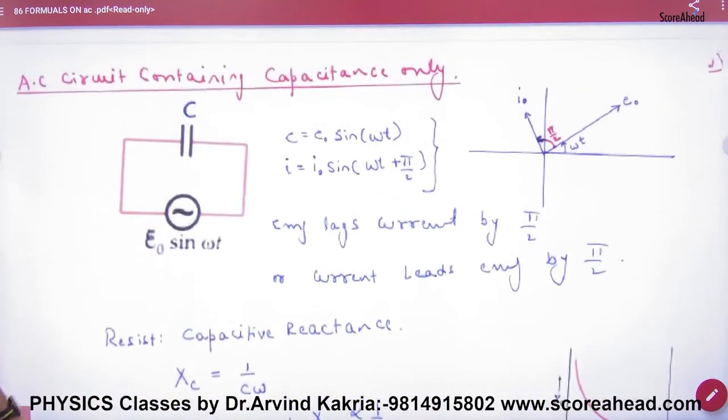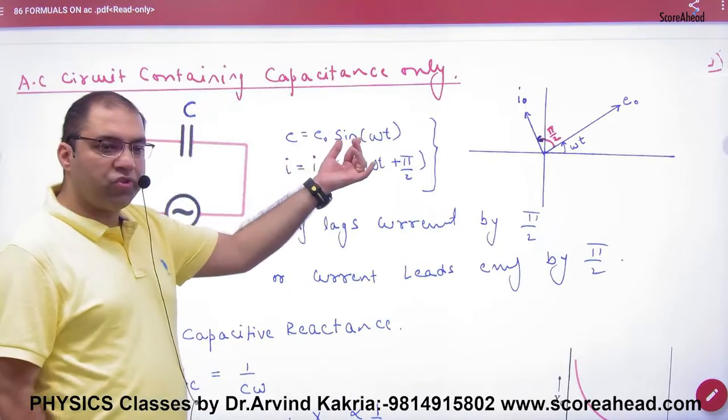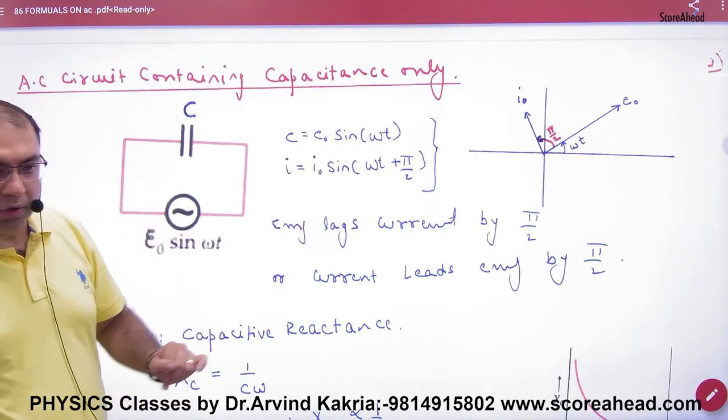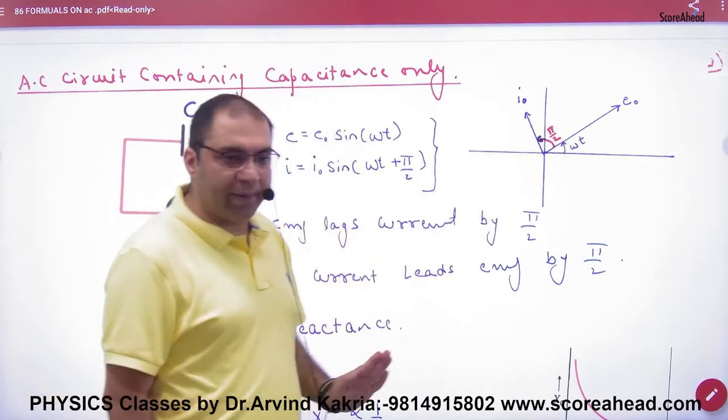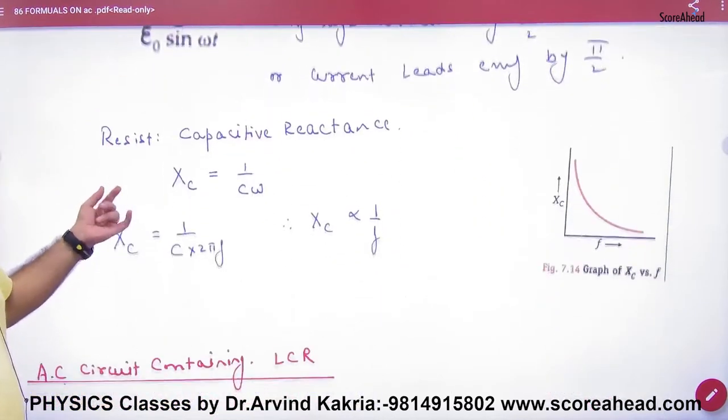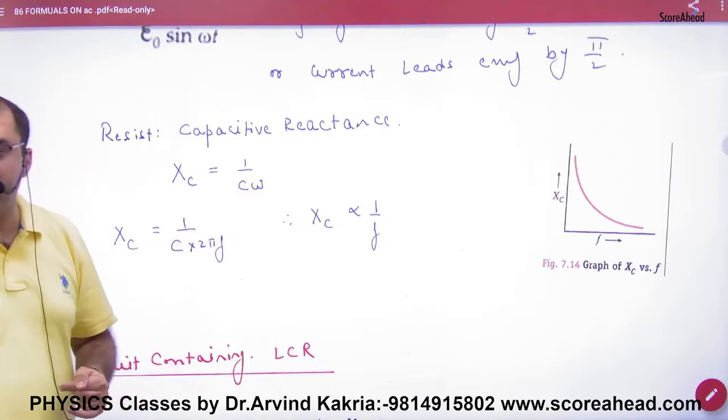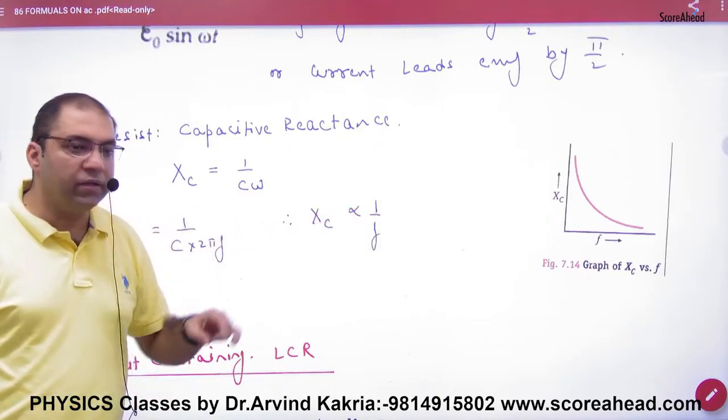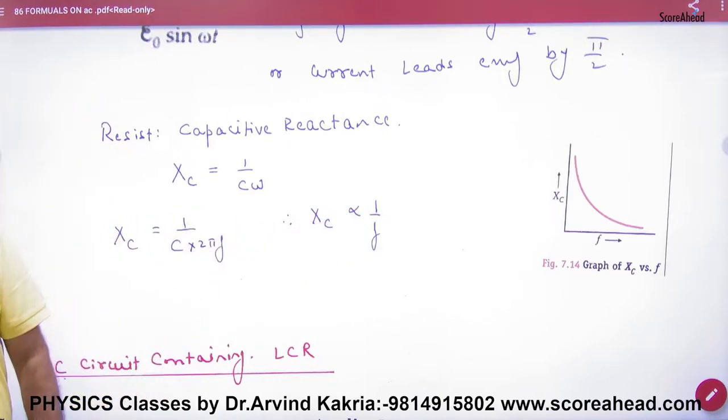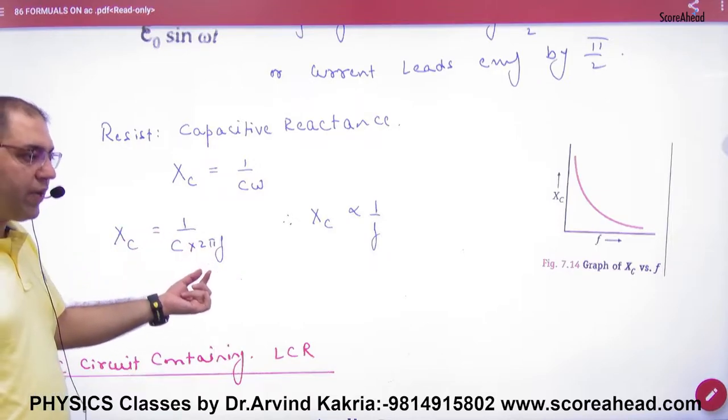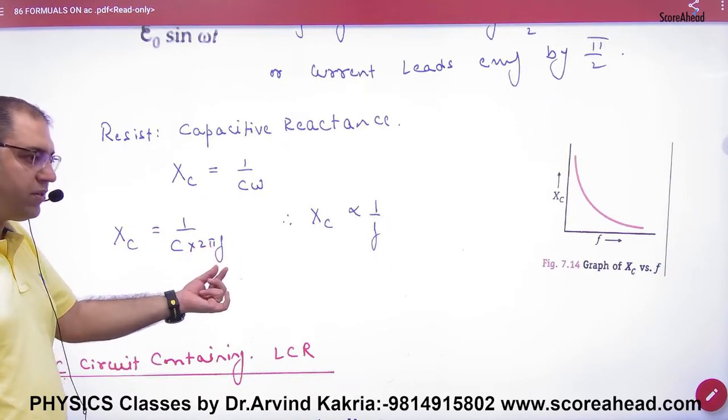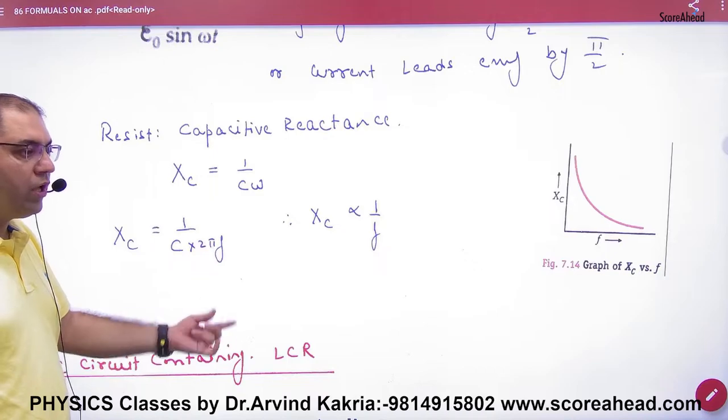In that way, only capacitor. If EMF is the equation, then the current will be higher than the angle of pi by 2. So EMF omega t will be higher than the angle of pi by 2. And what do we call the resistance? Capacitive reactance. XC is equal to 1 by C omega. This is important in the paper that XC is 1 by C omega. Omega is 2 pi frequency. So XC is inversely proportional to frequency.